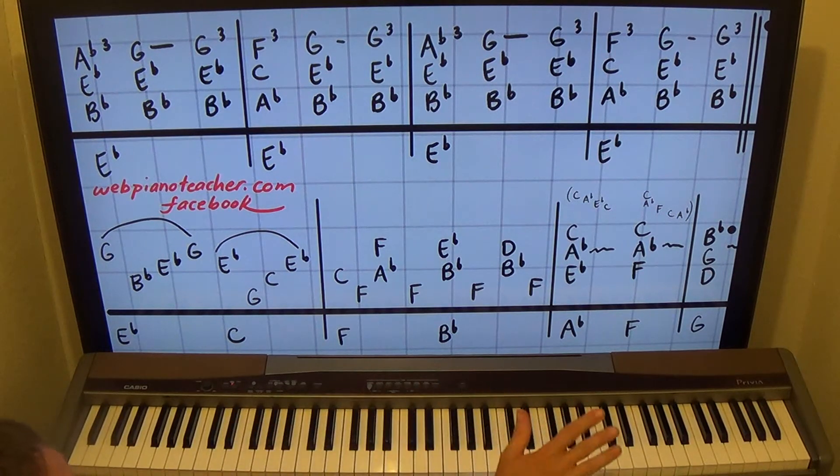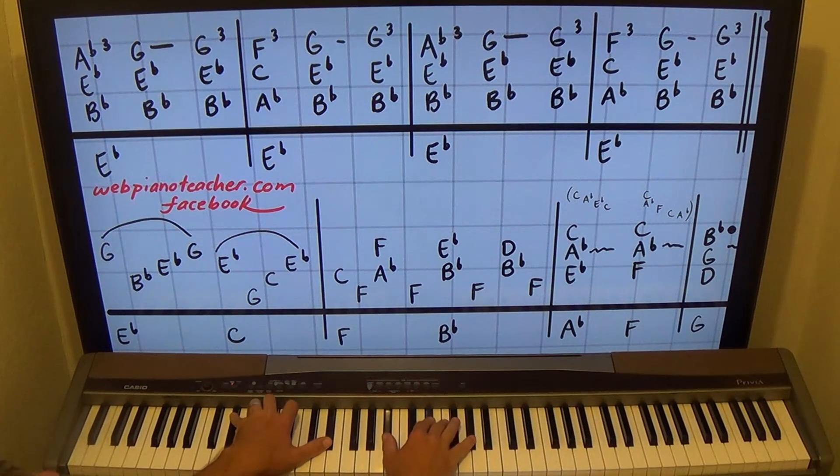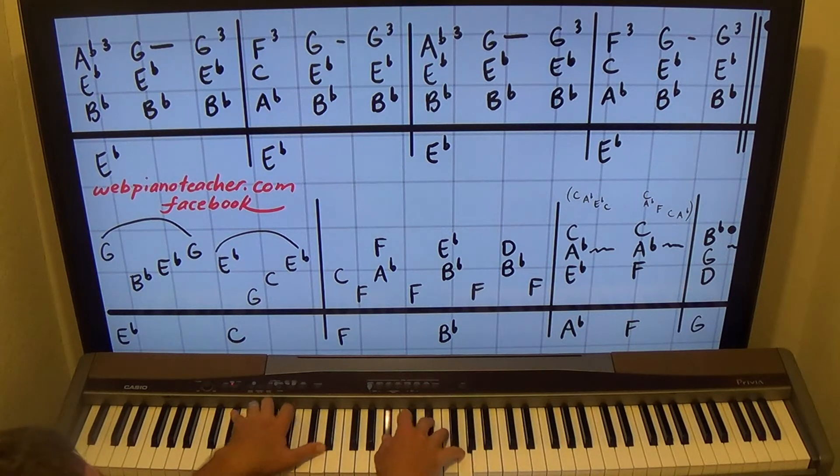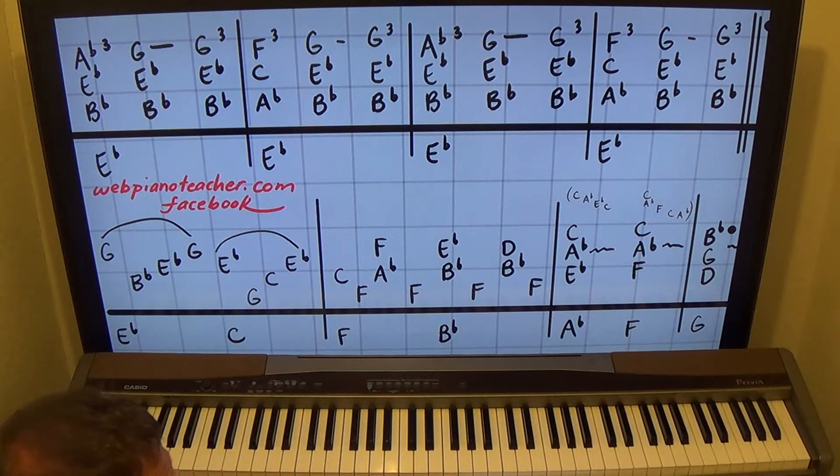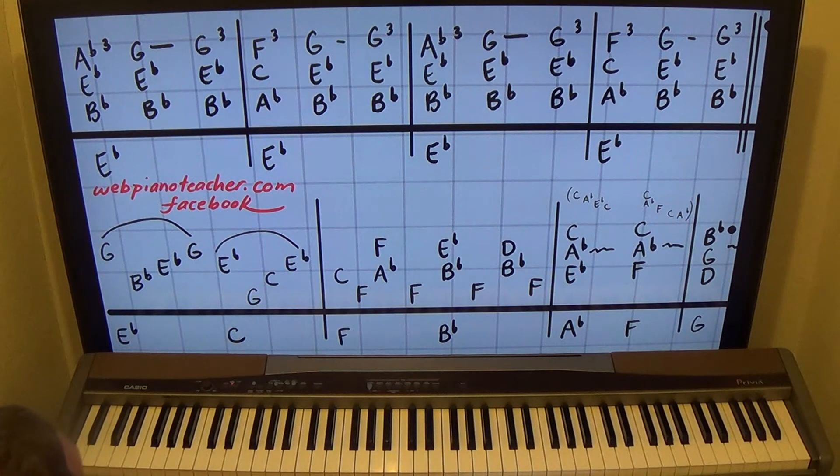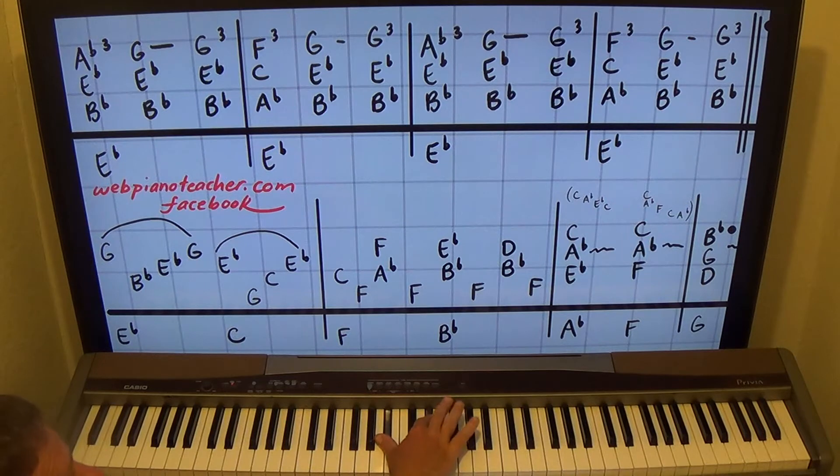There's some recording of John talking at the beginning of it and that's the version we're doing. It has more keyboard in it, a keyboard part that's pretty neat. So that's what we're doing - B flat, E flat, A flat.